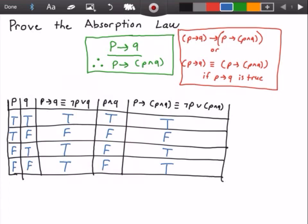And so now we have proven the absorption law. Now, where do we do this? Well, let me show you. Anywhere that we see P implies Q is true, which is here, here, and here. So that's row 1, row 3, and row 4.